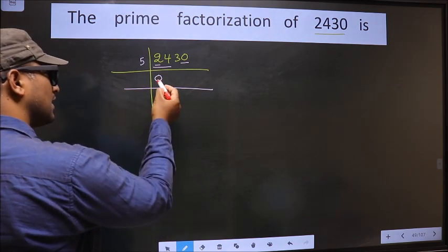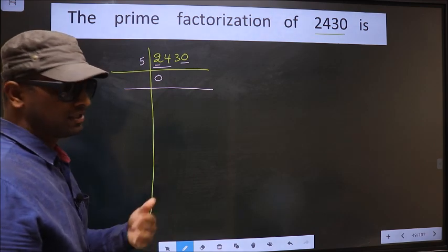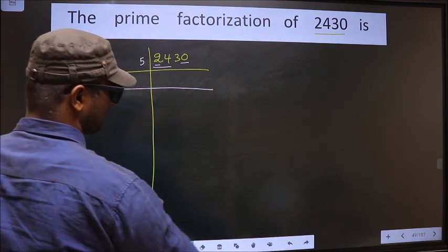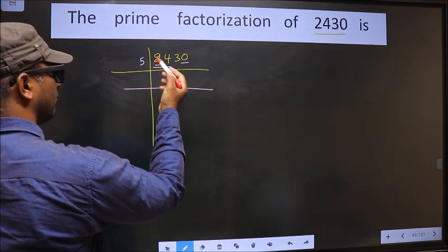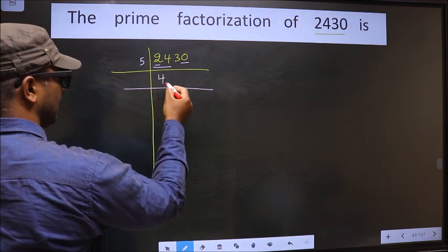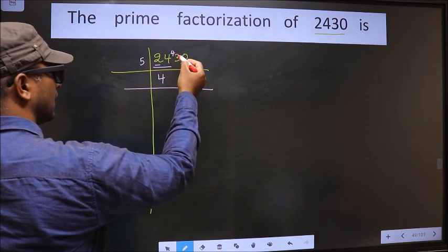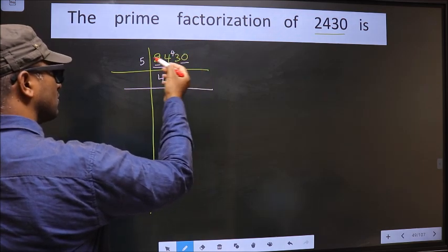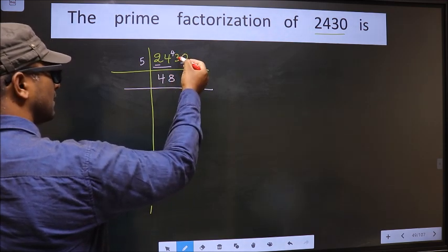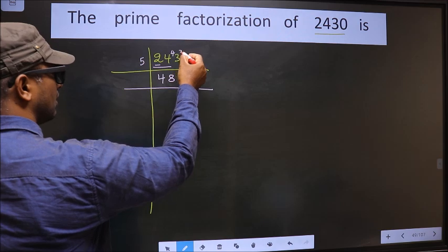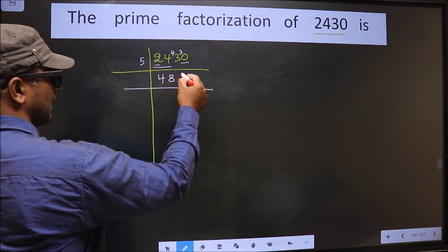But at the start, whether you put 0 or not, it does not count, so no need to put 0 at the start. So here we have 24. A number close to 24 in the 5 times table is 5 fours 20. 24 minus 20 is 4, carried forward making it 43. A number close to 43 in the 5 table is 5 eights 40. 43 minus 40 is 3, carried forward making it 30. When do we get 30 in the 5 table? 5 sixes 30.